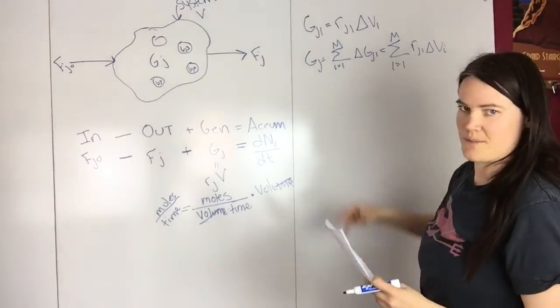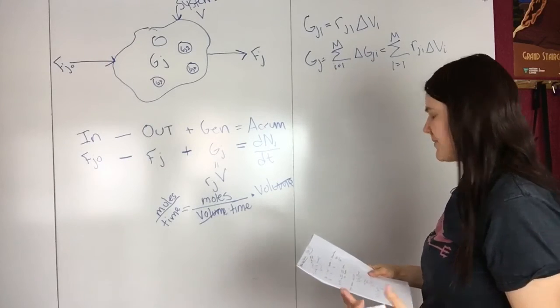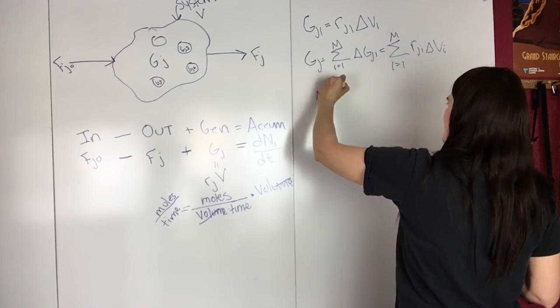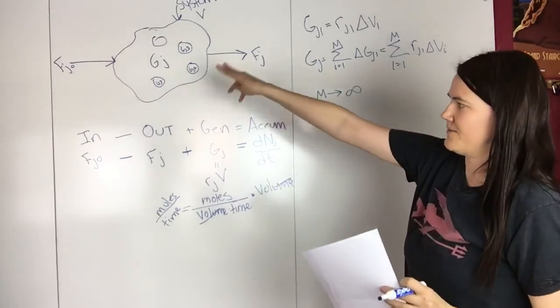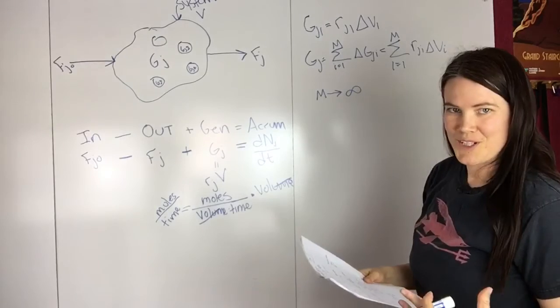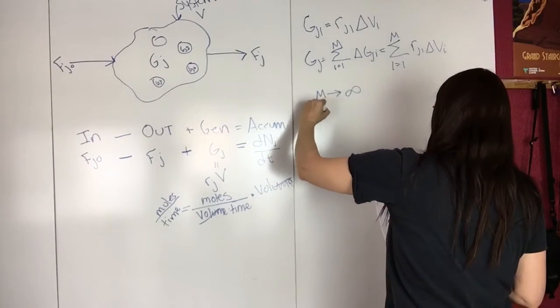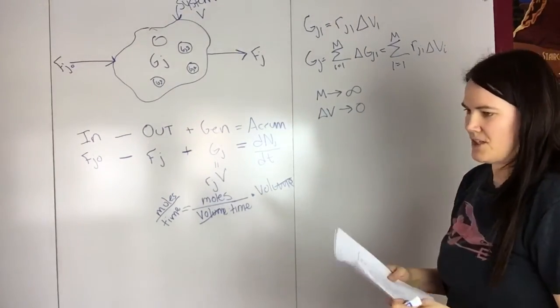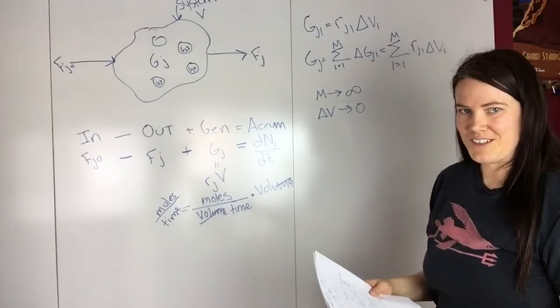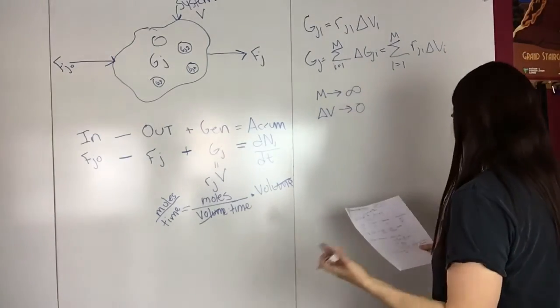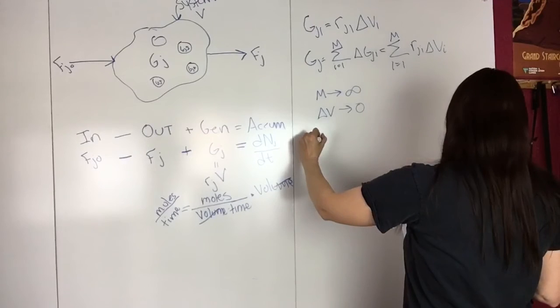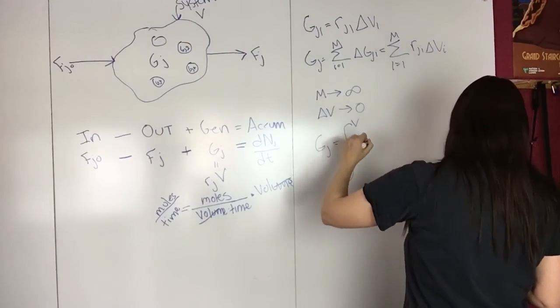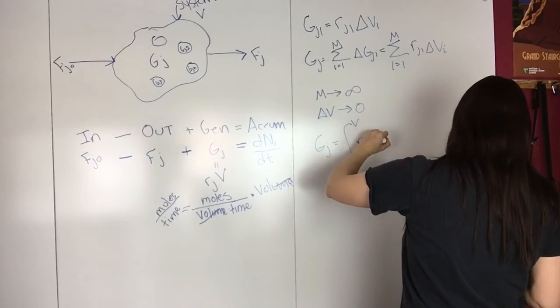So then if you set some limits to this, the limits we want to use are, first of all, we want to say that M approaches infinity, so then we have infinite number of mini-volumes in there. And also delta V approaches 0, so as the volume approaches 0, then you get an infinite number. So then you can rewrite this as GJ equals the integral of RJ dV.